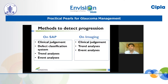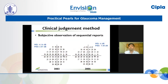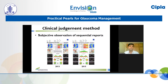Let's go through some of the more common methods to detect progression both on perimetry and imaging. The first is the clinical judgment method, which essentially means putting together the reports of follow-up examinations one next to the other and analyzing the changes. Here are the visual field reports of a patient — one done in 2002 and the other in 2005. We can see that the mean deviation is worsening, the pattern standard deviation is worsening from four decibels to seven decibels, and the threshold sensitivities in the superior hemifield also show reduction. This is how we use the clinical judgment method — however, this is a subjective evaluation.